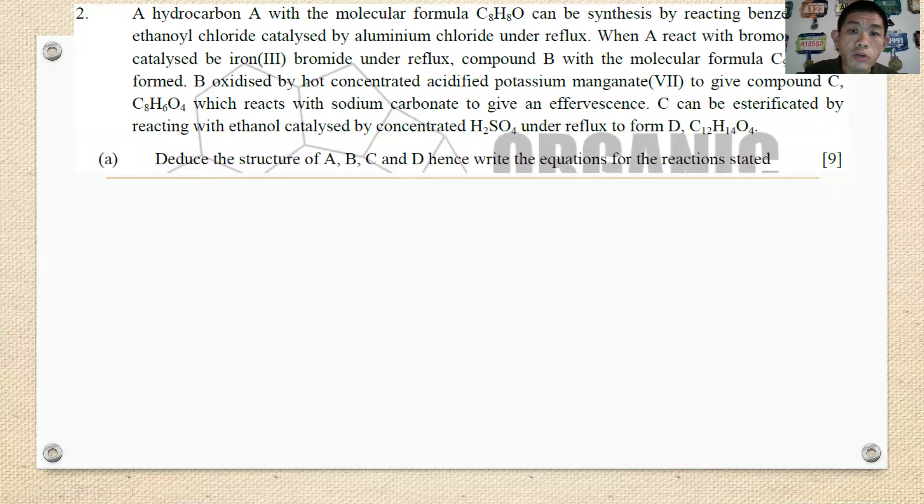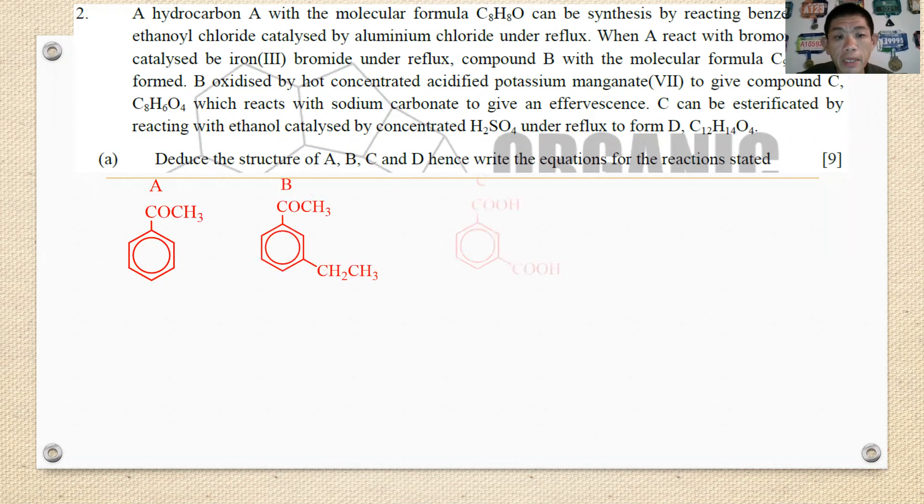So in here we are going to see the structure of ABCD and the equations that you have written just now. So this is the structure for B, C and D as we have deduced just now.